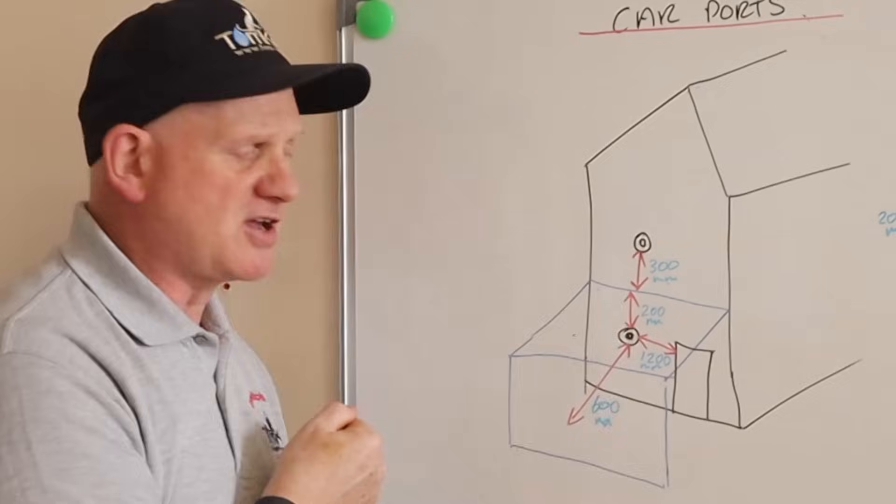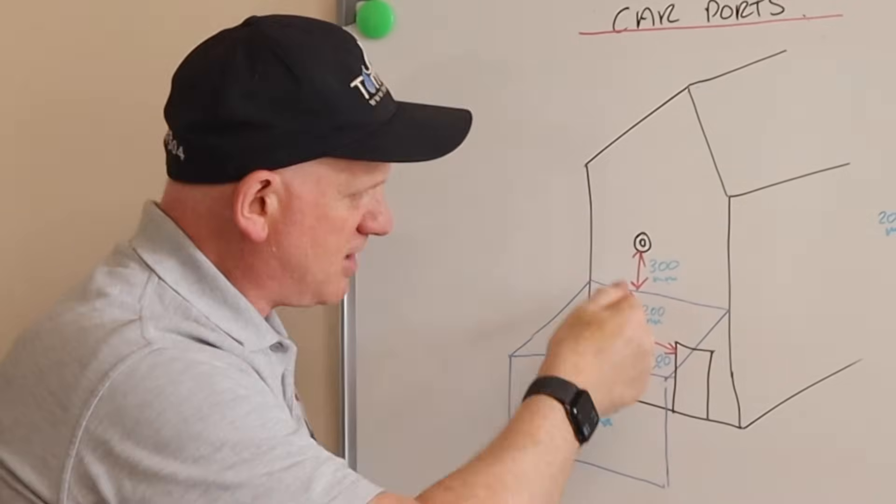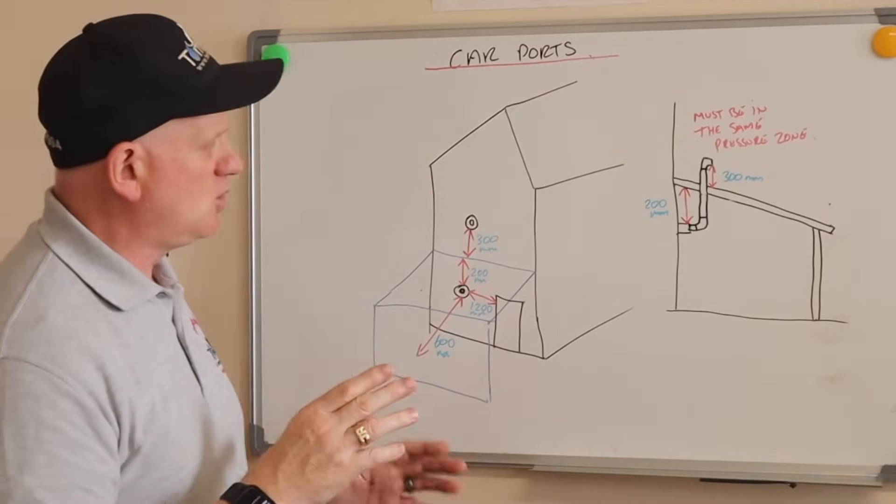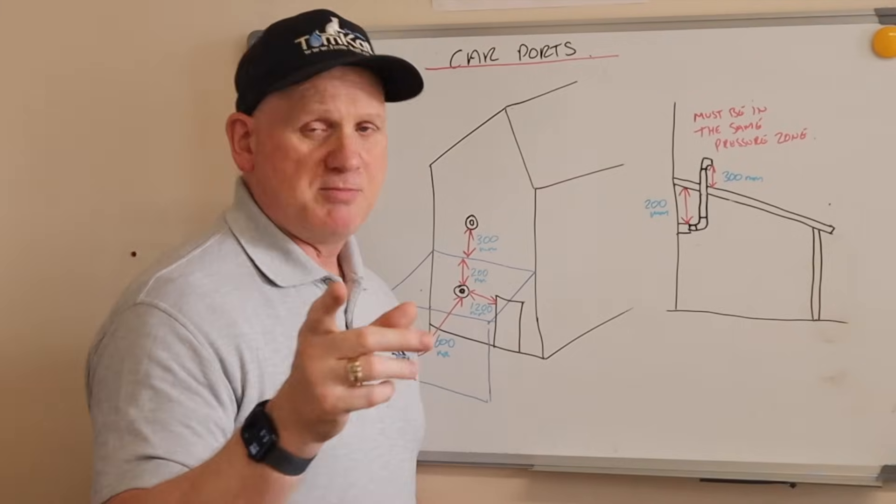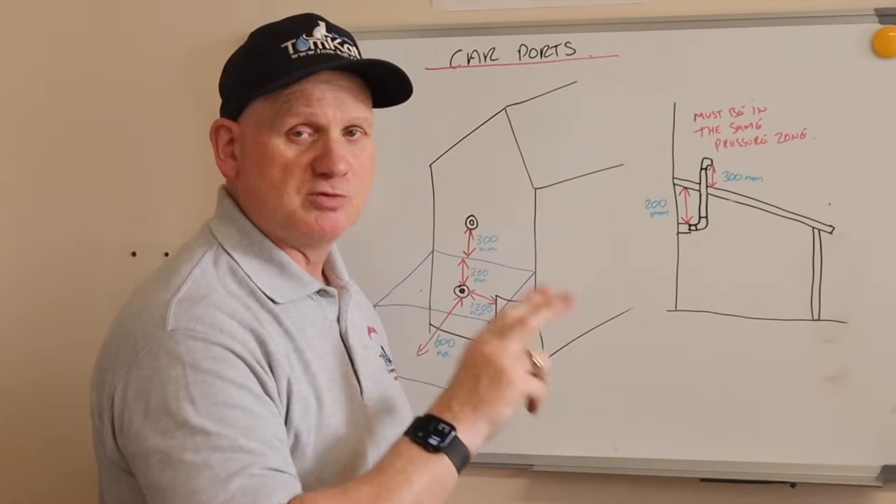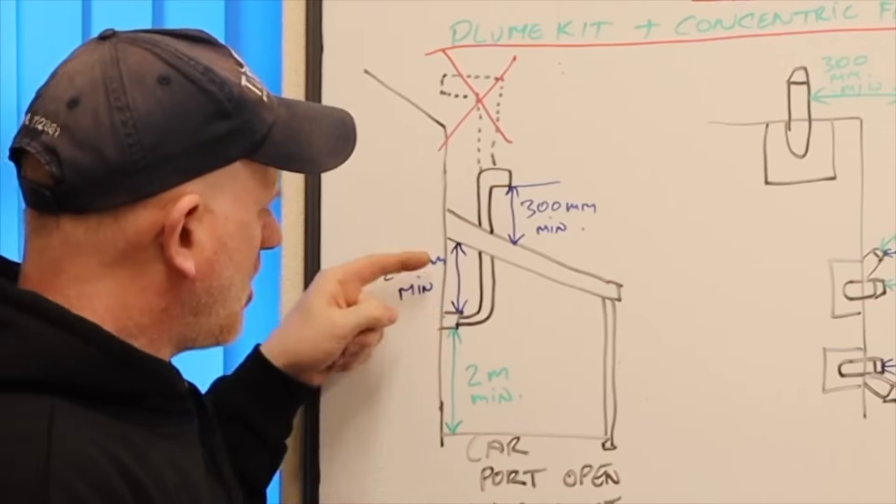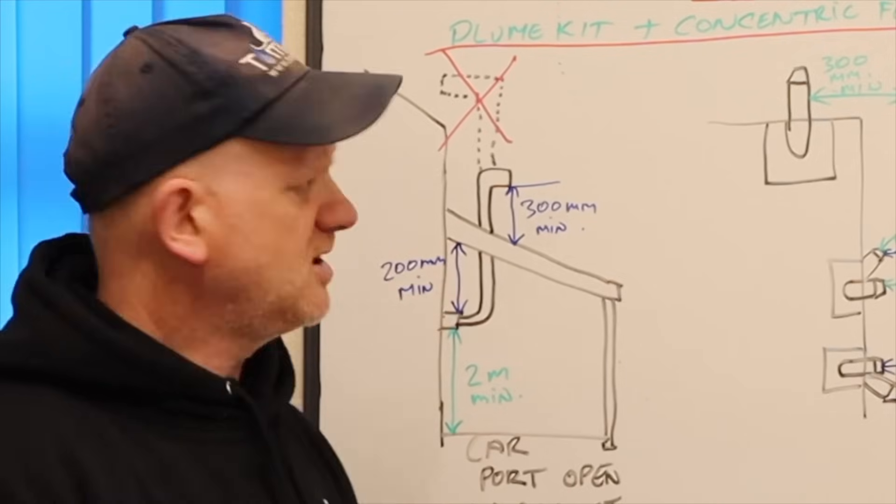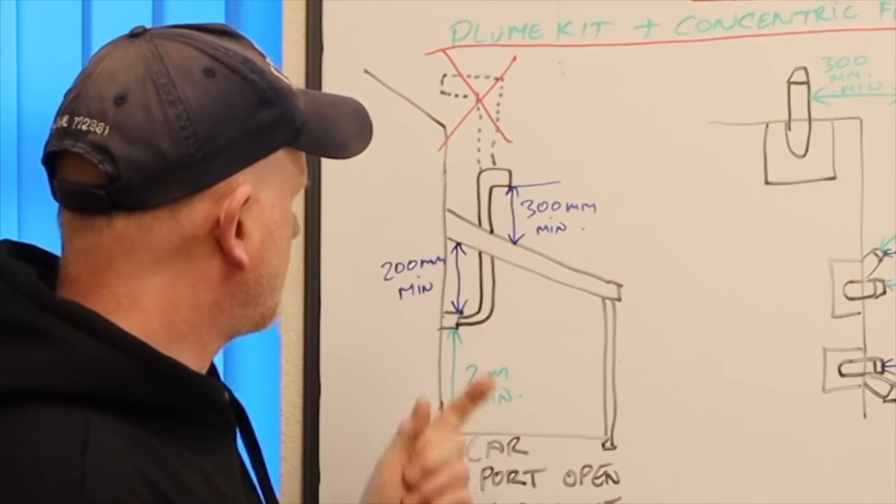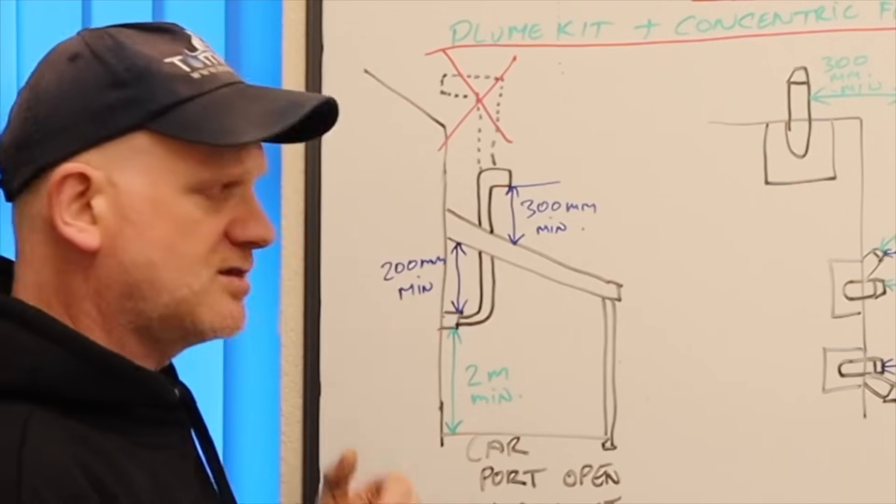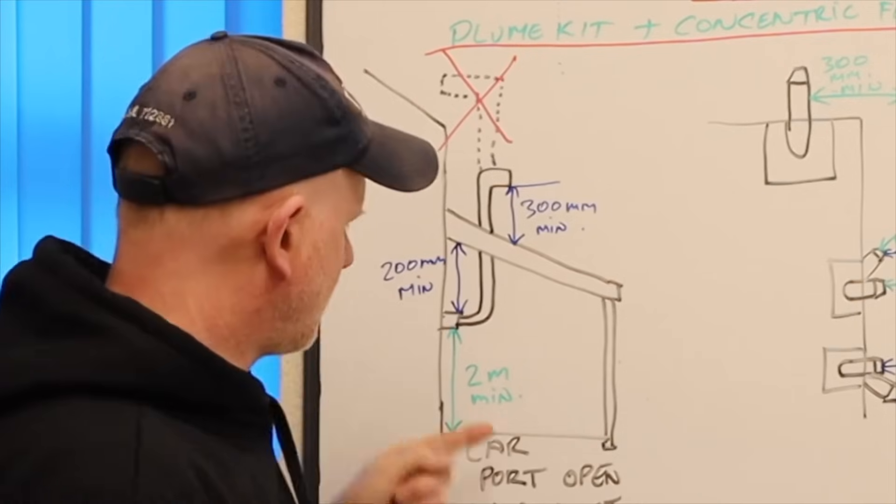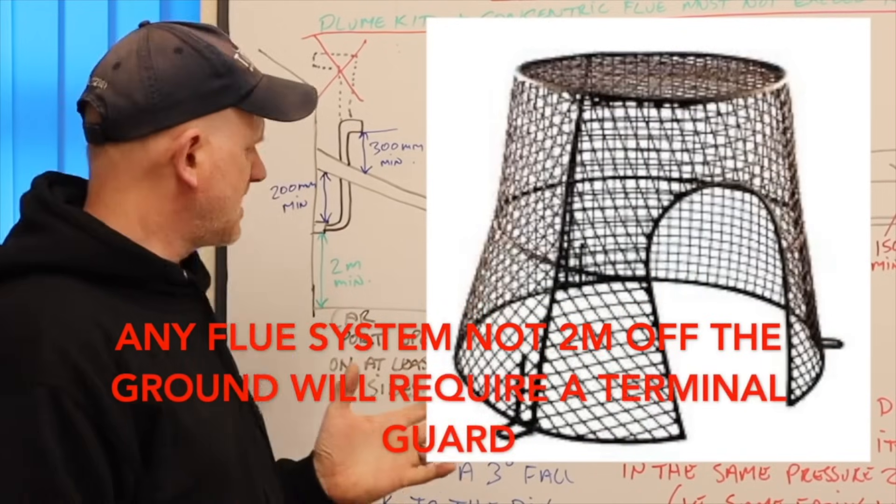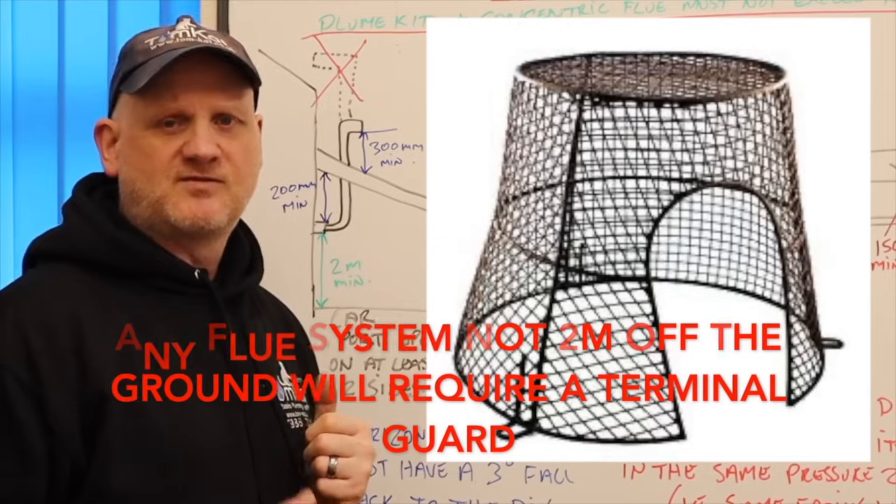And if you add a flue over the top of a carport, we need at least 300mm from the bottom to the top of the roof. So, we can use a plume management kit, remember, if the manufacturer allows you to, to help us with this installation. So, we need to still install the flue as it should be. So, 200mm away from the eaves or the carport. But we still need to be two metres off the floor.